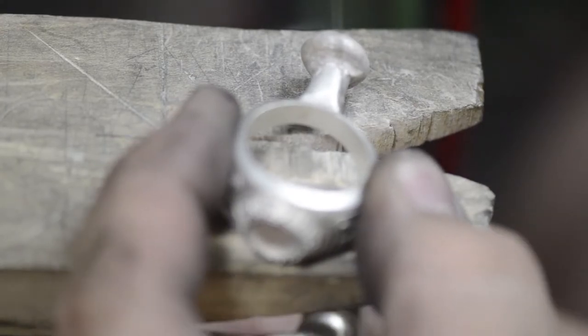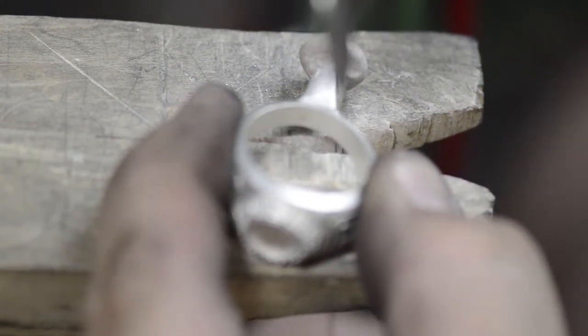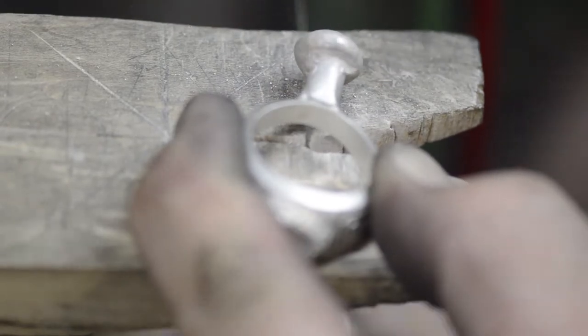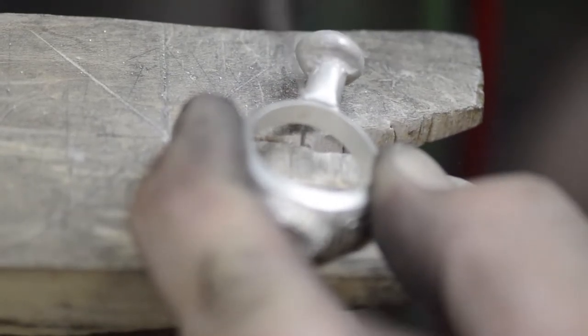It turns out really nice—investment casting processes have really high detailed results. You can see that sprue on the bottom—we're going to cut that off with a jeweler saw, then get it ready to clean up and add all our stones and final touches to the ring.